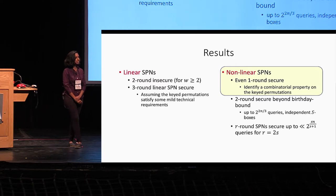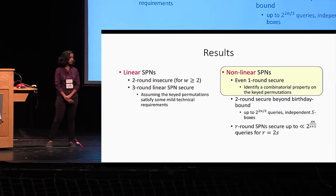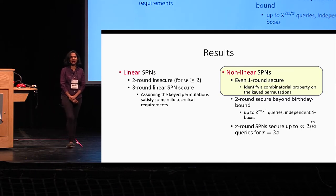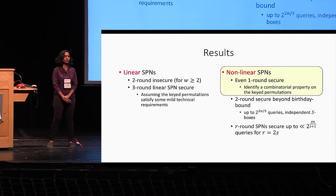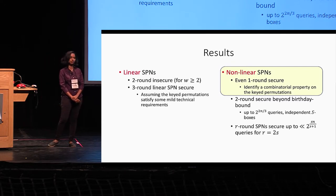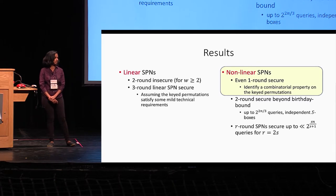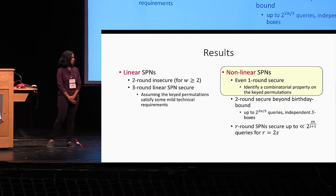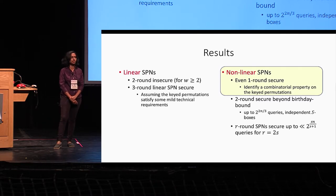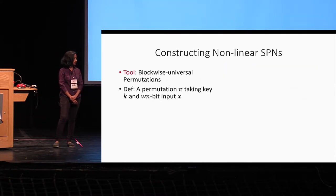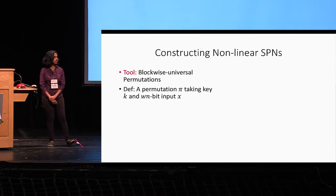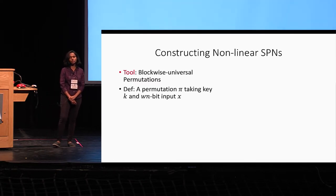To recall, our results cover both linear SPNs and nonlinear SPNs. We showed that a three-round linear SPN is secure, and I will mention a few things about this later. But right now I will focus mainly on the proof of security for a one-round nonlinear SPN, starting with the combinatorial property that the keyed permutations should satisfy — what we call block-wise universal permutations.